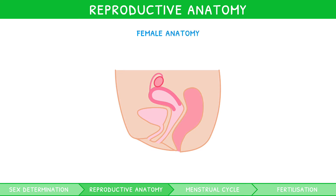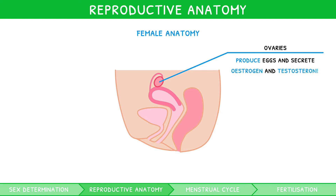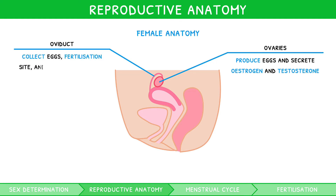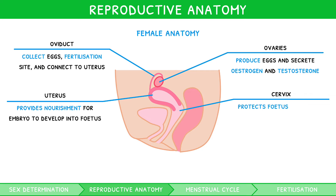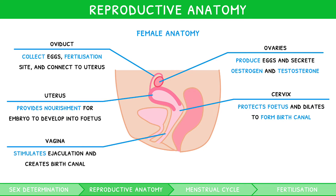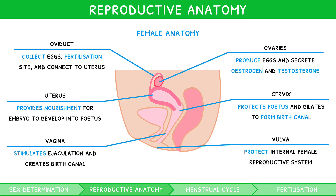Now let's look at the female reproductive system. The ovaries are egg-shaped structures that produce eggs and secrete oestrogen and progesterone. The oviducts are tubes which collect eggs, provide a fertilization site, and transfer the embryo to the uterus. The uterus is a structure which provides nutrients and hormones for the embryo to develop to form a fetus. The lining of the uterus is known as the endometrium. The cervix is a structure which protects the fetus and dilates to create the birth canal. The vagina is a structure which stimulates ejaculation and creates the birth canal. The vulva are structures which protect the internal female reproductive system. Ensure you take time to memorize those structures and their function, from multiple different angles.